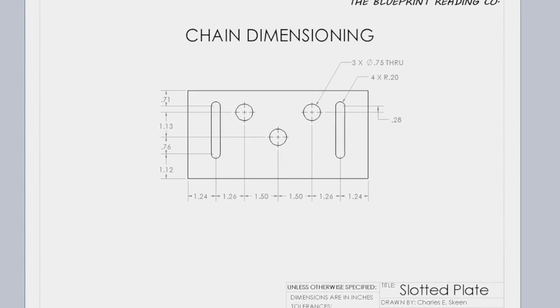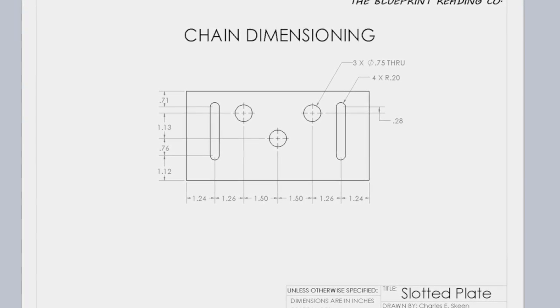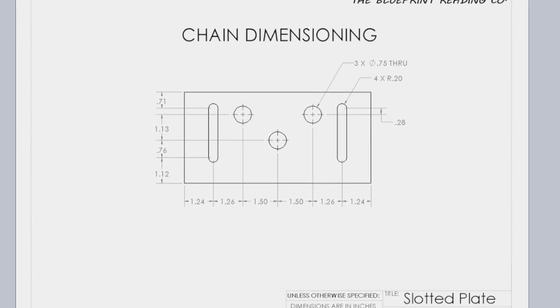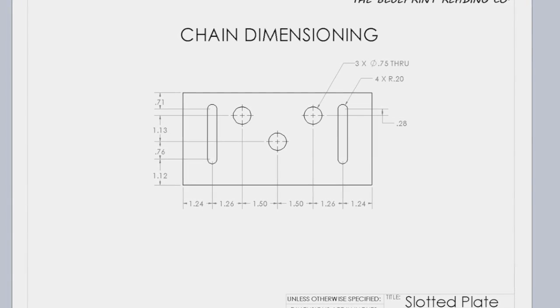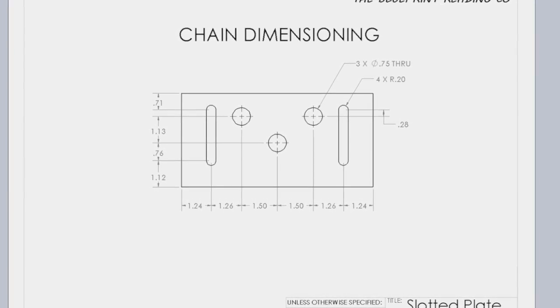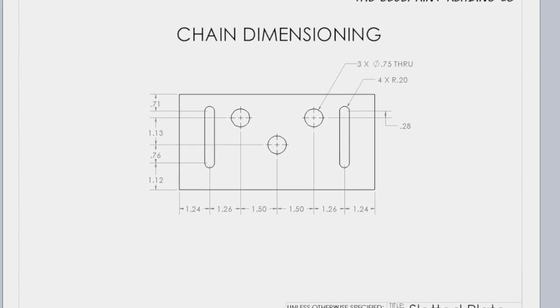For example, the holes on this drawing are dimensioned to each other. When chain dimensioning is used, the location of one feature is based on the location of the previous feature from which it is dimensioned.